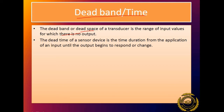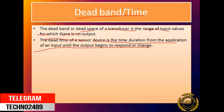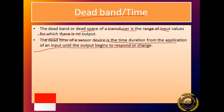The dead band or dead space of a transducer is the range of input values for which there is no output. That is, we are giving some input but getting no output — that range is called the dead band. Dead time of a sensor device is the time duration from the application of the input until the output begins to respond or change. Until the output does not start changing, that time period is called dead time.